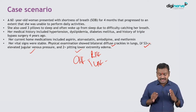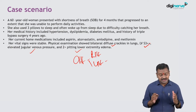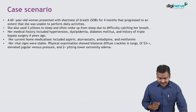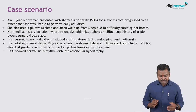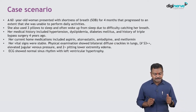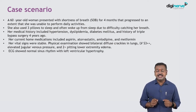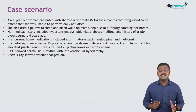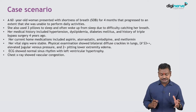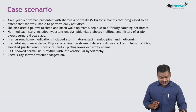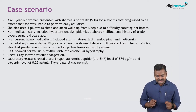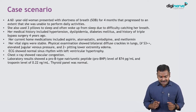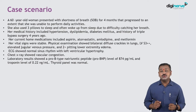This patient has evidence of congestive cardiac failure — heart failure of both the right and left ventricle. On evaluation, ECG shows normal sinus rhythm with LVH, possibly secondary to hypertension. Chest X-ray shows vascular congestion, meaning this patient has pulmonary edema. Laboratory tests show BNP of 74 picograms per ml and troponin of 0.22.